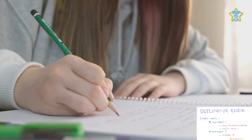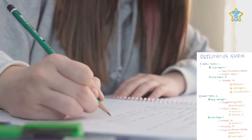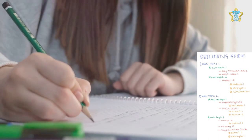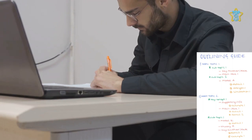Then we dove into the outline method, a structured approach that's all about main points and sub-points. It's like creating a roadmap for your thoughts, and who doesn't love a good map?